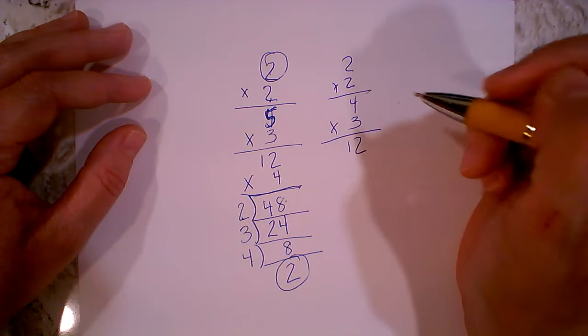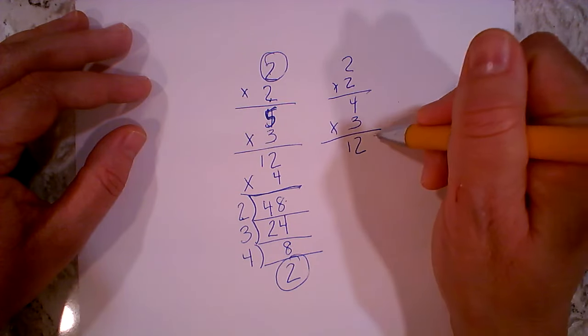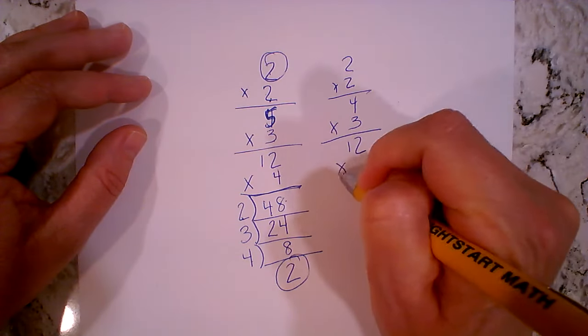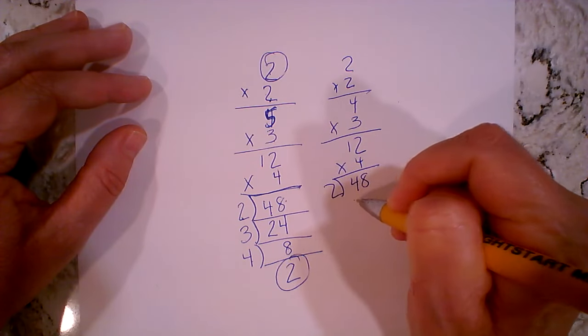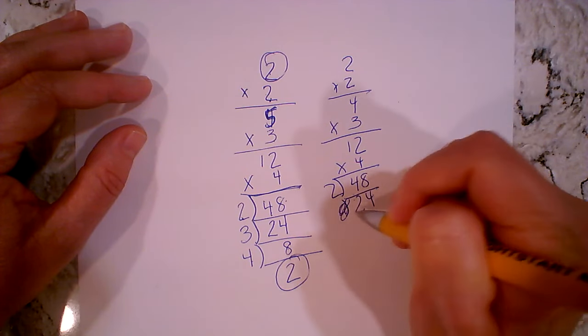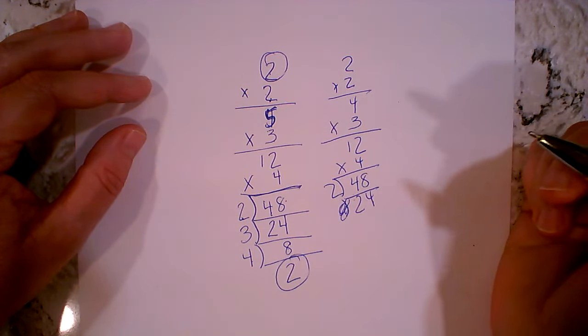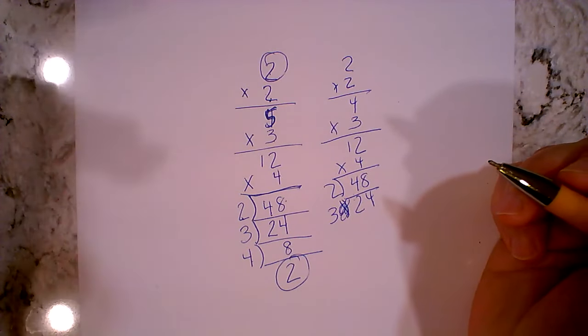So I might have them do this part one day. At the end of that day I would check their answers. If they're good to go, then the next day I'd have them continue: times four is 48, and then divided by two is 24. I would have them stop there, I would check the answer.